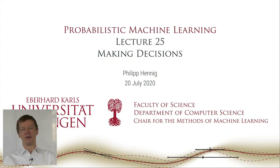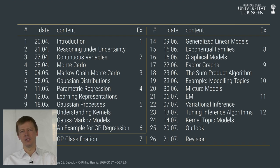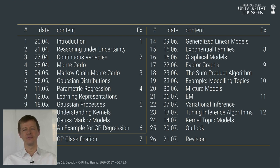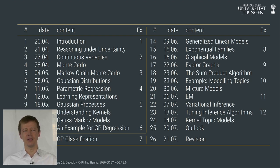Hello and welcome to Probabilistic Machine Learning lecture number 25. This is the penultimate lecture and actually the last content lecture of this course — the next one will only do revision. Over these 24 lectures we've tried to develop together an entire framework for how to learn from data under uncertainty by distributing truth over a space of hypotheses and manipulating these hypotheses in light of data under some assumptions about how the data is generated from the hypotheses.